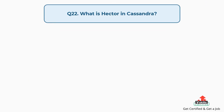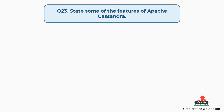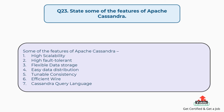Question number twenty-two: What is Hector in Cassandra? Hector was one of the early Cassandra clients. It is an open source project using the MIT license, written in Java. Question number twenty-three: State some of the features of Apache Cassandra. Some of the features of Apache Cassandra are: High scalability, High fault tolerant, Flexible data storage, Easy data distribution, Tunable consistency, Efficient wire, and Cassandra query language.